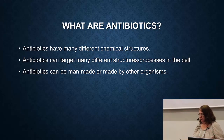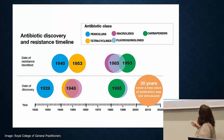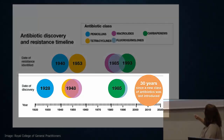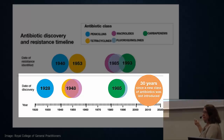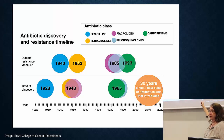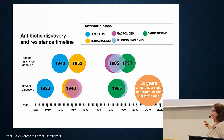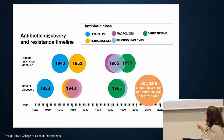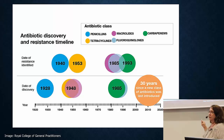Looking at the antibiotic discovery timeline, in 1928 we had the discovery of penicillins. Then in the 40s we had tetracyclines and macrolides. In the 80s we had carbapenems and fluoroquinolones. However, it's been 30 years since we've discovered new antibiotics. There have been many variants — better penicillins or better fluoroquinolones — but completely new classes, there are only a couple even in trials.